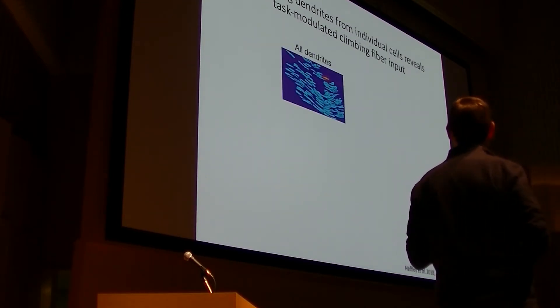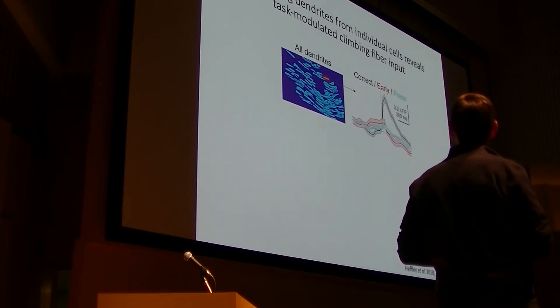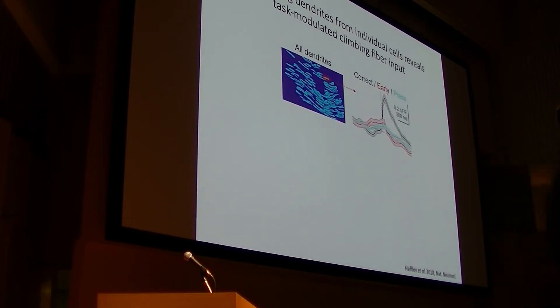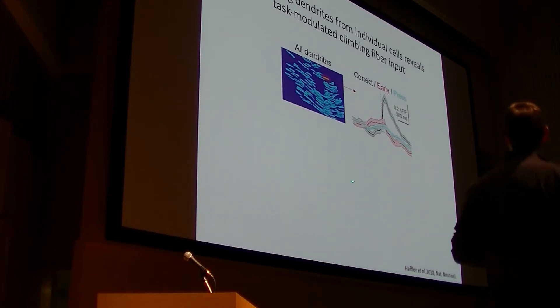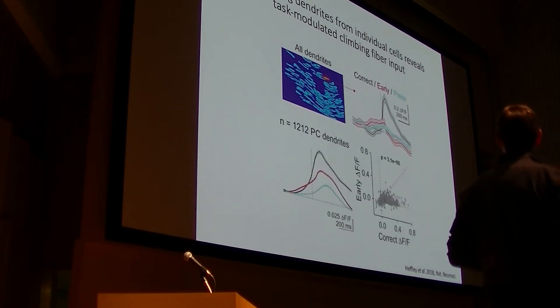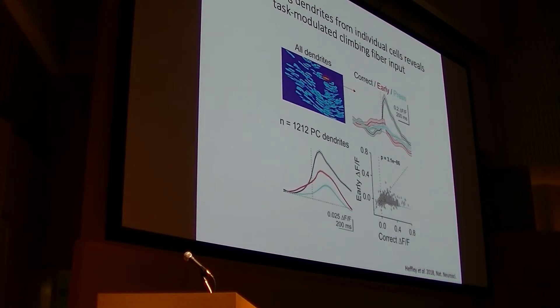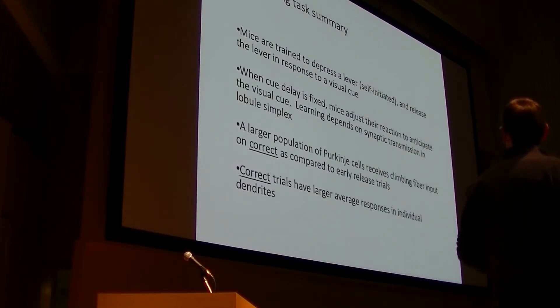This result held true across a large number of experiments where you can see that there's a much larger fraction of Purkinje cells receiving input from the climbing fibers when animals correctly timed their movements. So this is a population average. You can also look at the level of individual Purkinje cell dendrites. So one example is shown here, which is the selected one. And what you can see is that when we average across trials, this particular Purkinje cell dendrite exhibits a very large calcium transient for correctly timed movements, significantly greater than when the animals mistimed their movements or when they press the lever. Again, this held true across a large number of observations.